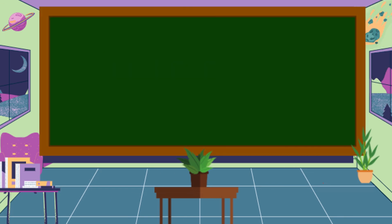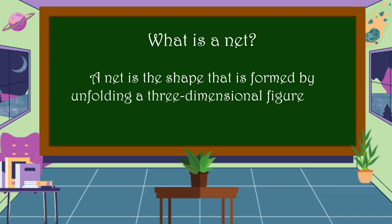To show the models of some solid figures, we're going to use a net. What is a net? A net is the shape that is formed by unfolding a three-dimensional figure. It is composed of all the faces of the figure.